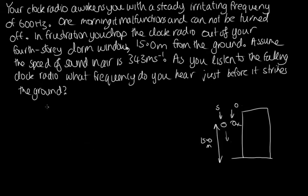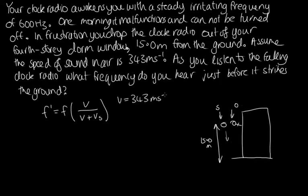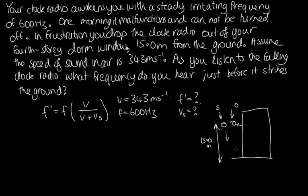You're 15 metres above the ground and the clock radio is moving away from you. You are the observer and the clock radio is the moving source, so: f dash = f × v / (v + v_s), since the source is moving away. We know v = 343 m/s and f = 600 hertz. To find v_s — the velocity just before it hits the ground — we use the kinematic equation: v² = v₀² + 2a·d.